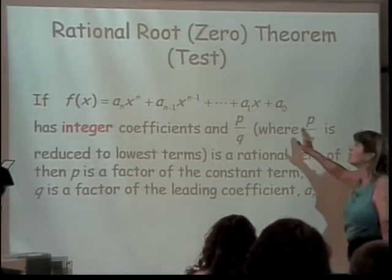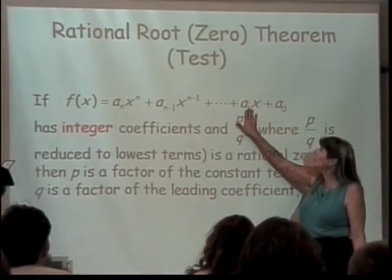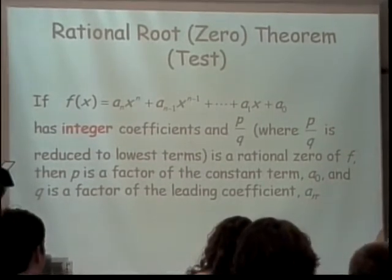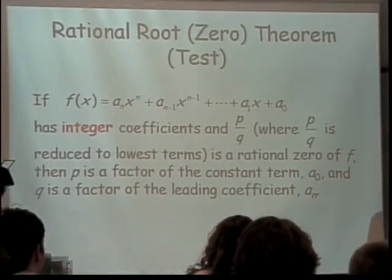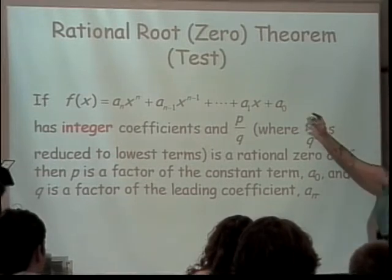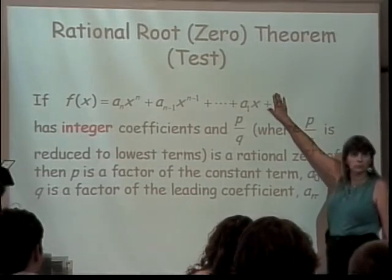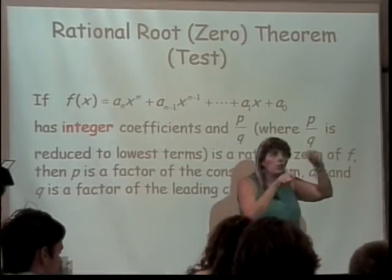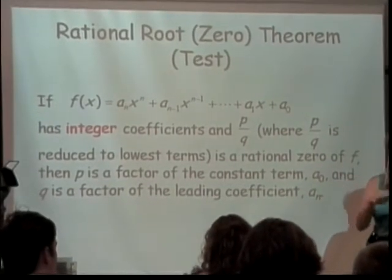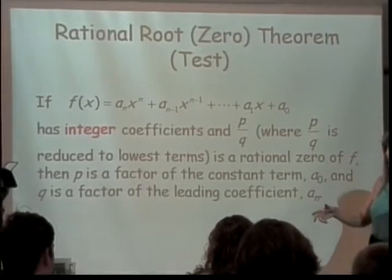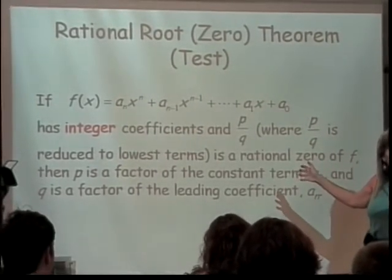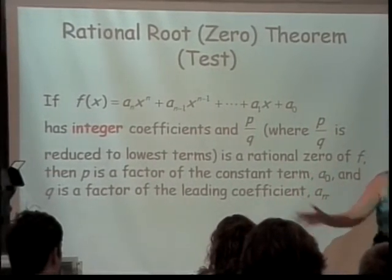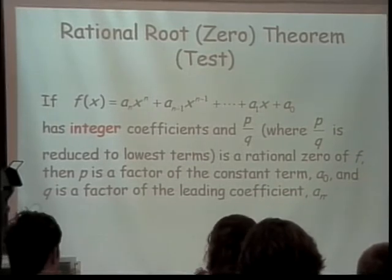But what the rational root test says is if you've got a polynomial, and these coefficients are all integers, then if there is a rational root, then the way it's going to look is it will be a factor of my constant term divided by a factor of my leading coefficient. And so you can make fractions out of these. That doesn't make a whole lot of sense written in math and a little bit of English. So let's do it with actual numbers, and hopefully it'll make a little more sense.